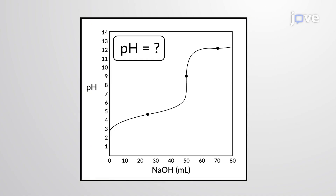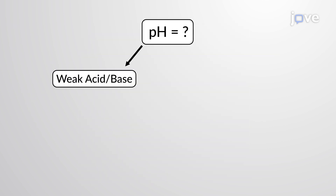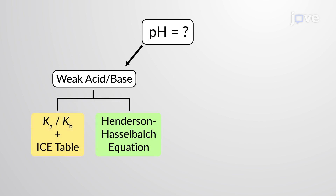The pH at different stages of a weak acid or base titration is calculated using different methods during various points of the titration. If a weak acid or base is the main determinant of the pH, the Ka or Kb and an ICE table or the Henderson-Hasselbalch equation are used.